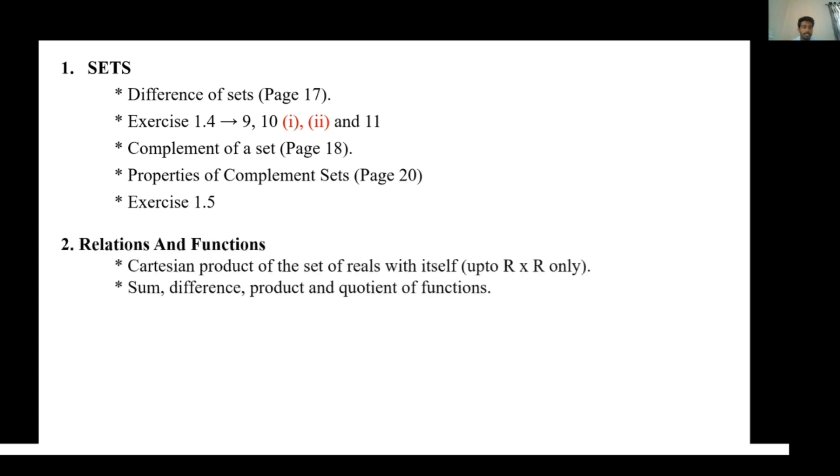Chapter 2, Relations and Functions: It will only go up to Cartesian product of the set of reals with itself, R × R. Previously R × R × R with three sets was considered, but this time they have not taken into consideration three sets, just they will be dealing with two sets, that is R × R. Also, sum, difference, product and quotient of functions has been deleted.